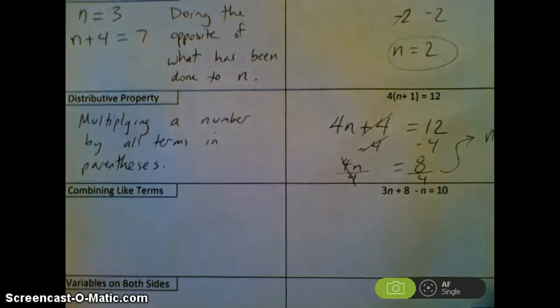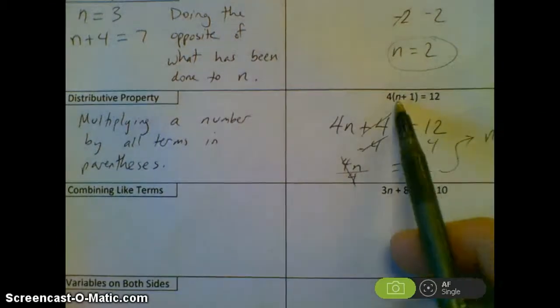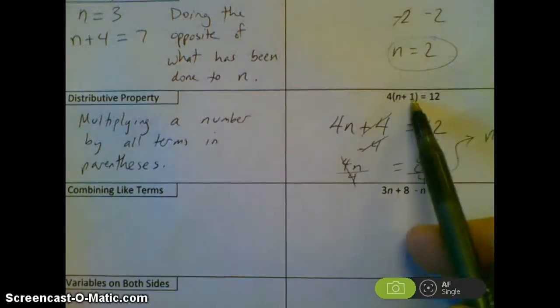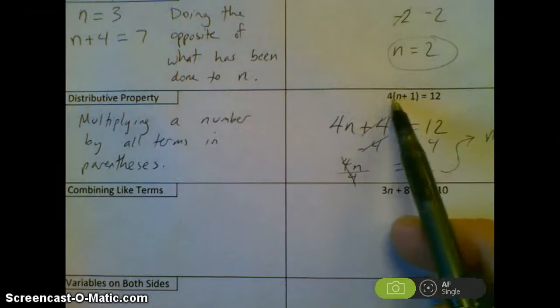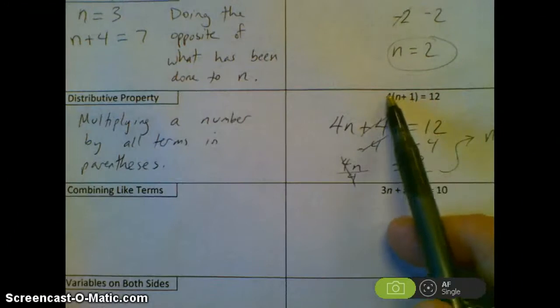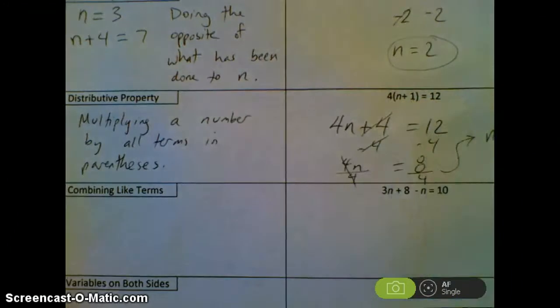Plugging that in: 2 plus 1 is 3, and 3 times 4 is 12. That is correct.